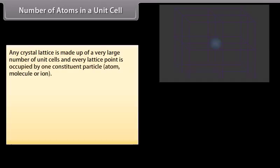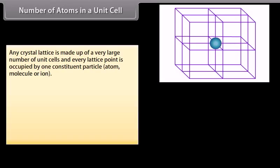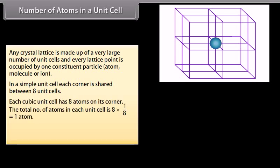Any crystal lattice is made up of a very large number of unit cells and every lattice point is occupied by one constituent particle — atom, molecule or ion. In a simple unit cell, each corner is shared between 8 unit cells. Each cubic unit cell has 8 atoms on its corners. The total number of atoms in each unit cell is 8 × (1/8) = 1 atom.